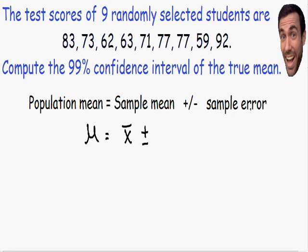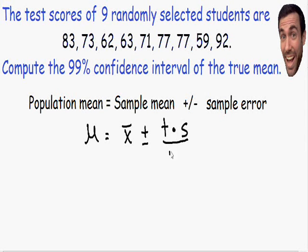In my last video the sampling error was written with the letter z, but for this example we need to use the letter t. So the sampling error is t multiplied by the standard deviation of the sample — written with the letter s, since the population standard deviation is not given to us — all divided by the square root of the sample size n.